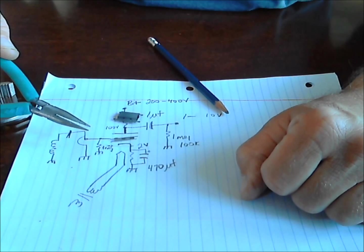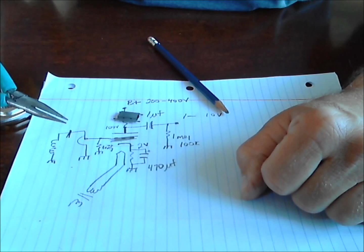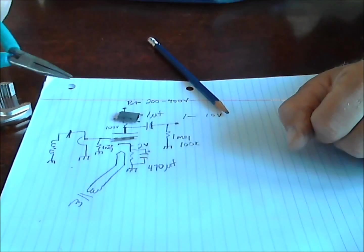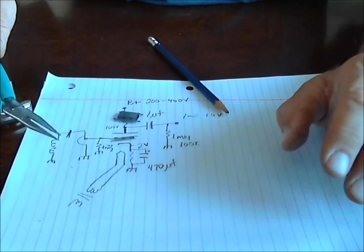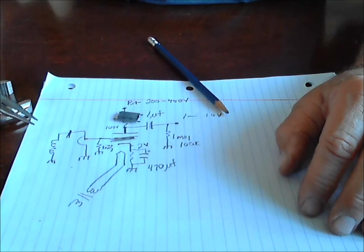A 12AX7, after about 2 milliamps, it's done. You can't get, no matter what you do, you're not going to get more than 2 milliamps through a 12AX7, unless you run the grid positive, and that's generally not done.